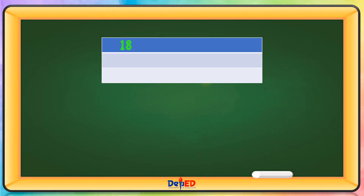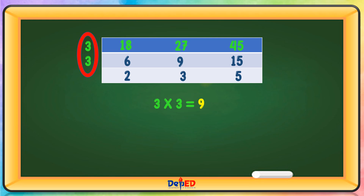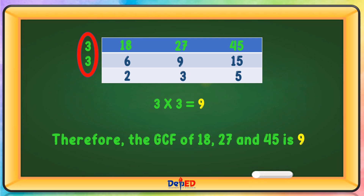We have 18, 27, and 45. Using prime number 3: 18 divided by 3 equals 6, 27 divided by 3 equals 9, 45 divided by 3 equals 15. Again by 3: 6 divided by 3 equals 2, 9 divided by 3 equals 3, 15 divided by 3 equals 5. Multiply the prime numbers: 3 times 3 equals 9. Therefore, the GCF of 18, 27, and 45 is 9.